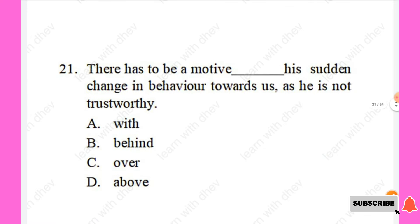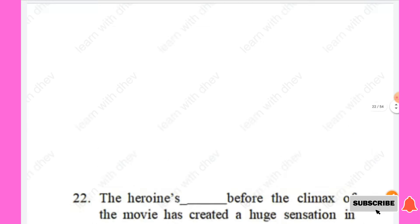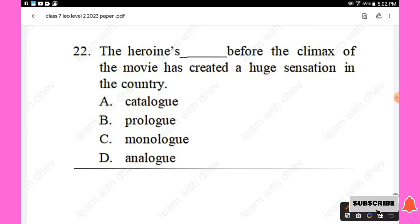Question 21: There has to be a motive — his sudden change in behavior towards us, as he is not trustworthy. Options: with, behind, over, above. The right answer is 'behind.' Option B. Question 22: The heroine's — before the climax of the movie has created a huge sensation. Options: catalog, prologue, monologue, analogue. The right answer is 'monologue.' Option C.